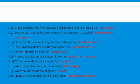Question 15: vermicomposting is done by — answer is earthworm. When we add earthworms to kitchen waste, the compost that is made is called vermicompost, and this process is called vermicomposting. Question 16: the process of collecting rainwater is known as rainwater harvesting. Question 17: which flower always faces the sun — answer is sunflower. Question 18: which flower blooms with sunrise and closes with sunset — answer is morning glory. Question 19: which animal has no sweat gland — answer is camel.